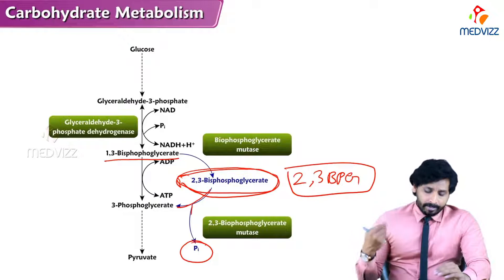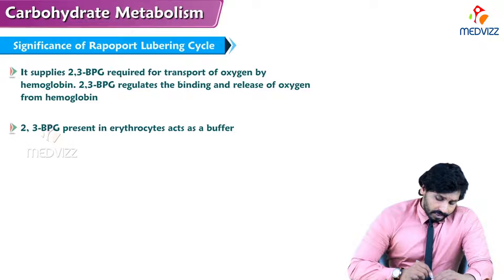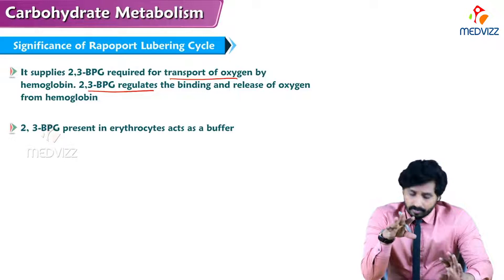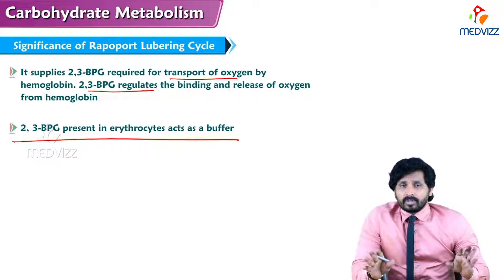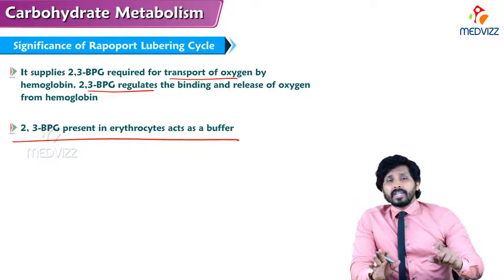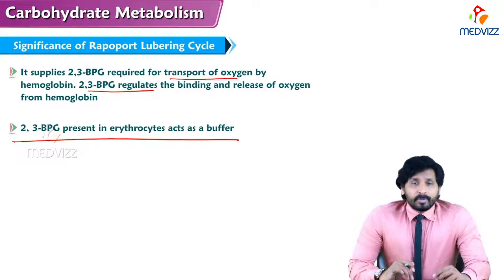In summary, the significance of the Rapoport-Luebering cycle is that it supplies 2,3-BPG for transport of oxygen by hemoglobin, and 2,3-BPG regulates the binding and releasing of oxygen from hemoglobin. Additionally, 2,3-BPG present in erythrocytes acts as a buffer — hemoglobin is a protein that acts as a buffer, and this buffering activity is provided by 2,3-BPG. That's all about the Rapoport-Luebering cycle.